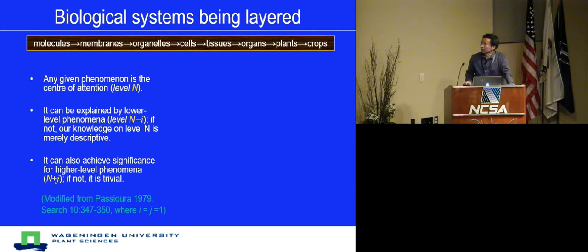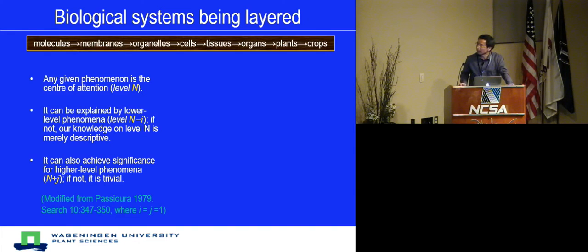Assuming that the essential attention of research activity is at a certain biological level N, to study phenomena at level N we have to go to the lower level N-minus-I to find the explanations. Otherwise, our knowledge at level N is nearly descriptive. On the other hand, our research at level N should aim to achieve significance at a higher aggregation level, N-plus-J.